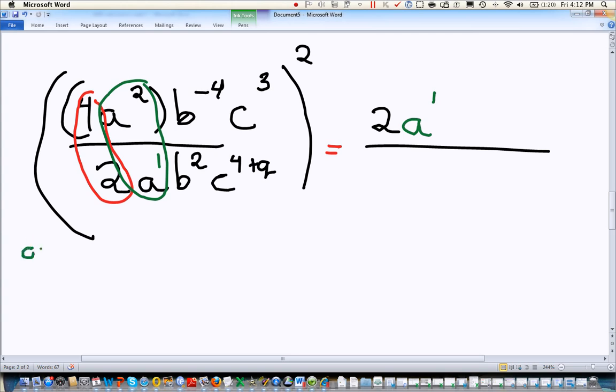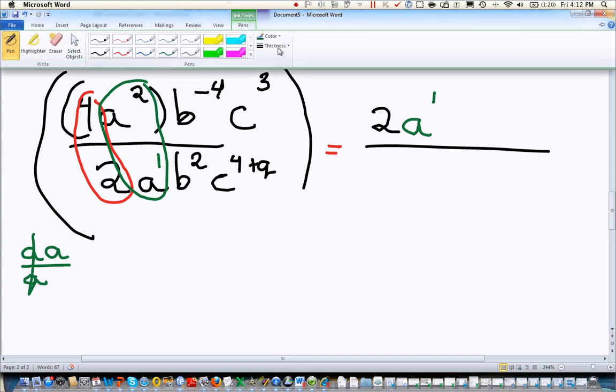And if you want to think about what's really going on, over here I'll write it. You have 2 A's on the top, 1 A on the bottom. These guys cancel off, leaving us the 1 A on the top. That's a nice little way to think about it in terms of reality and what's really going on and why that rule works.